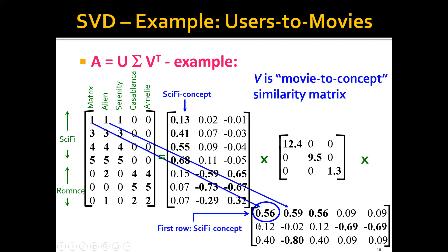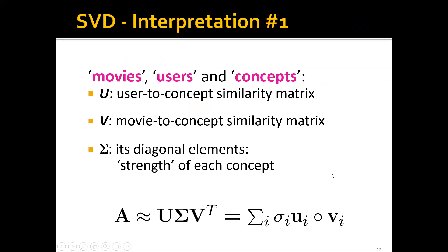For V, which is the movie-to-concept similarity matrix, each row represents one concept and each column represents one movie. Naturally, the first three movies all have relatively high scores in the sci-fi concept but relatively low scores in the romance concept. To summarize, in this movies-users-concepts example, we can interpret matrix U as a user-to-concept similarity matrix, V as a movie-to-concept similarity matrix, and sigma's diagonal elements as the strength of each concept.